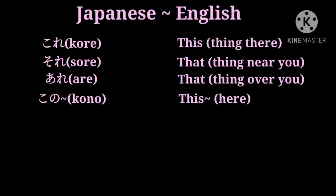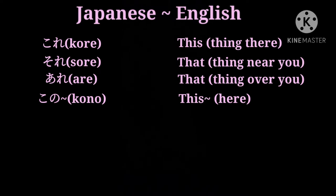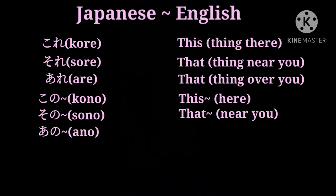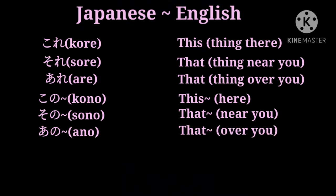Kono means this or here — kono. Sono means that near you — sono. Ano means that over there — ano.